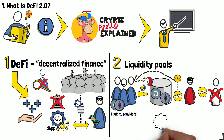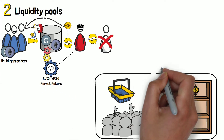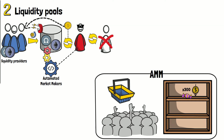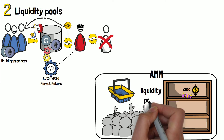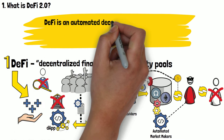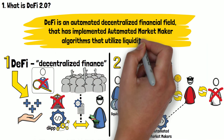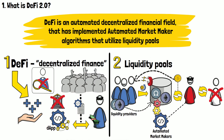The traders don't actually trade on the liquidity pools. Instead, the trading processes happen on automated market makers — special platforms designed to facilitate those trading activities utilizing liquidity pools. You can look at AMMs as those same shops where you buy candy, and liquidity pools are the shelves where the candy is placed. To sum up, DeFi is an automated, decentralized financial field with no single owner that has implemented automated market maker algorithms utilizing liquidity pools, which are filled with cryptocurrencies provided by liquidity providers — aka investors and initial project owners.